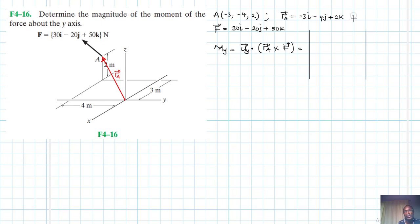We know that u is just going to be equal to j, so here we have 0, 1, 0. We have RA: minus 3, minus 4, 2. We have 13, minus 20, then we have 15.